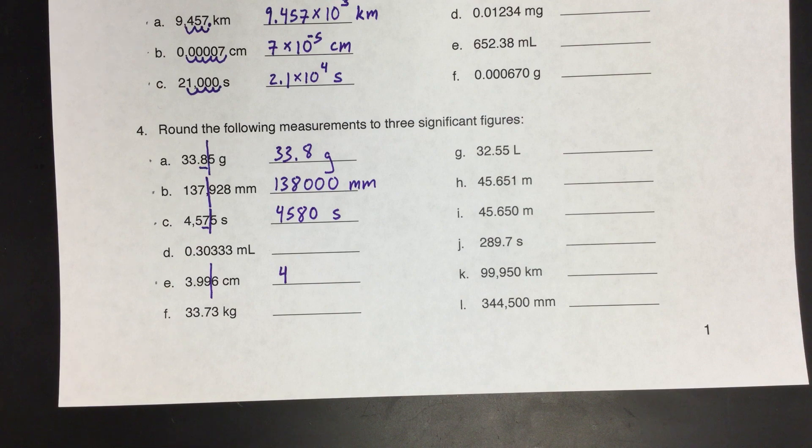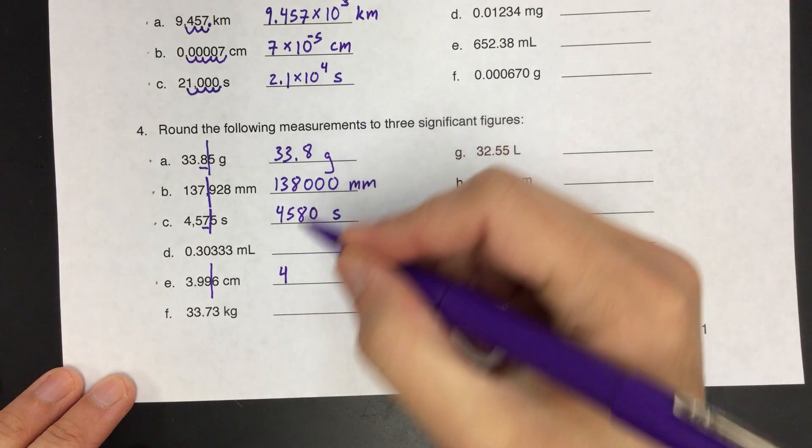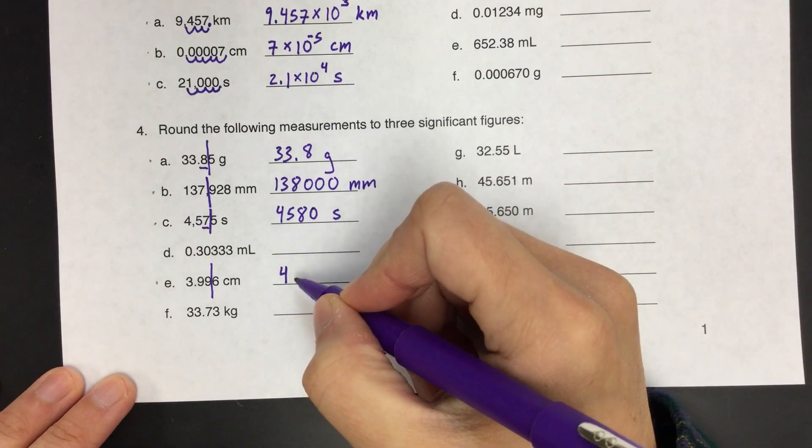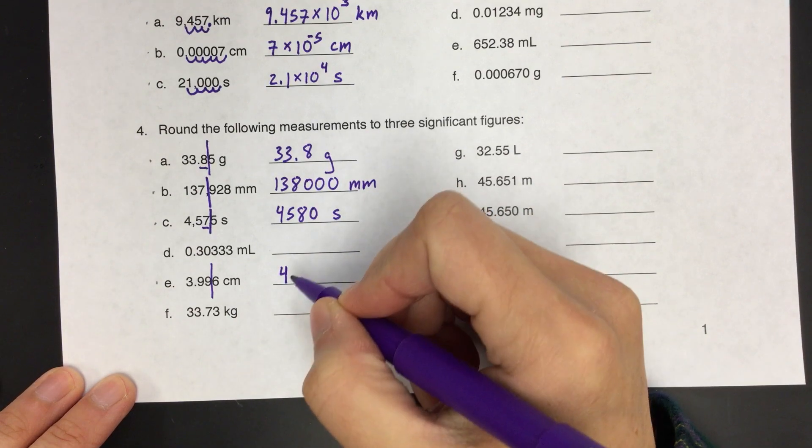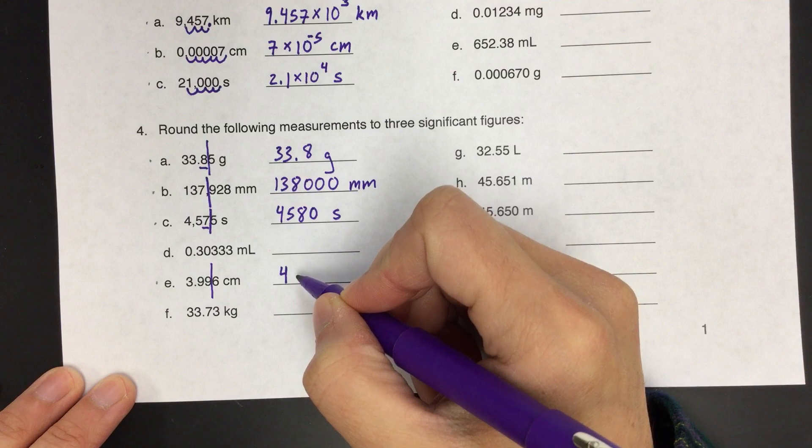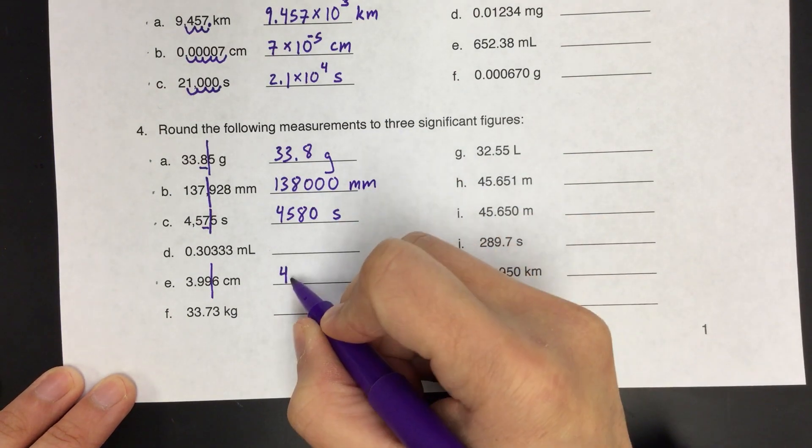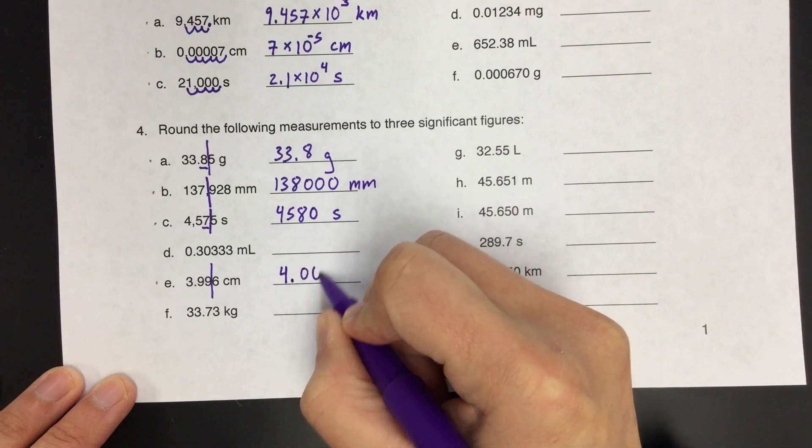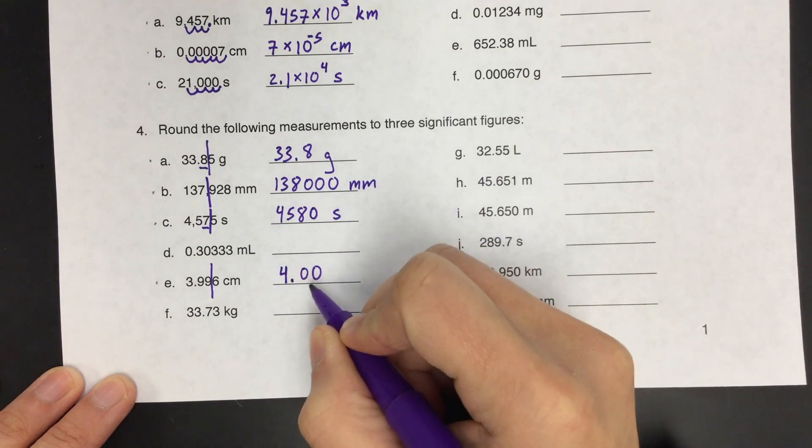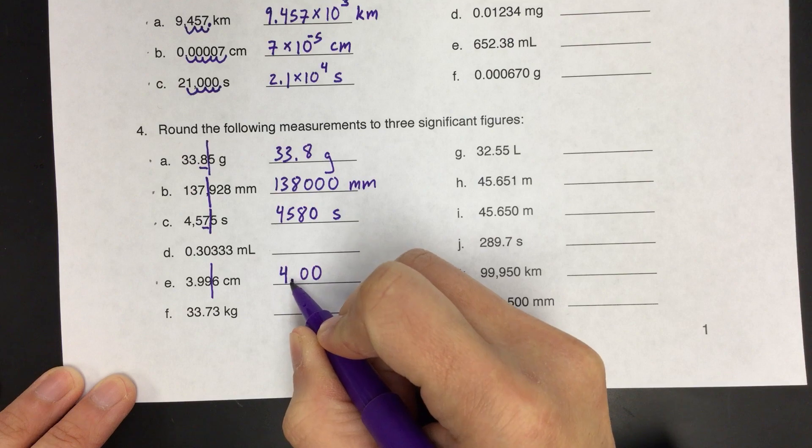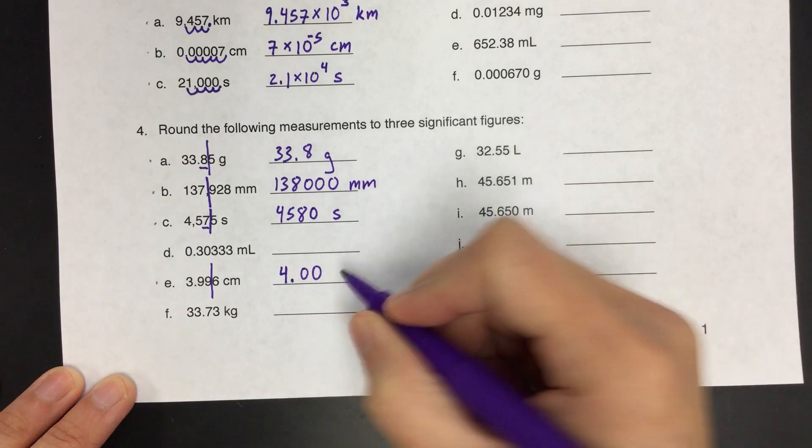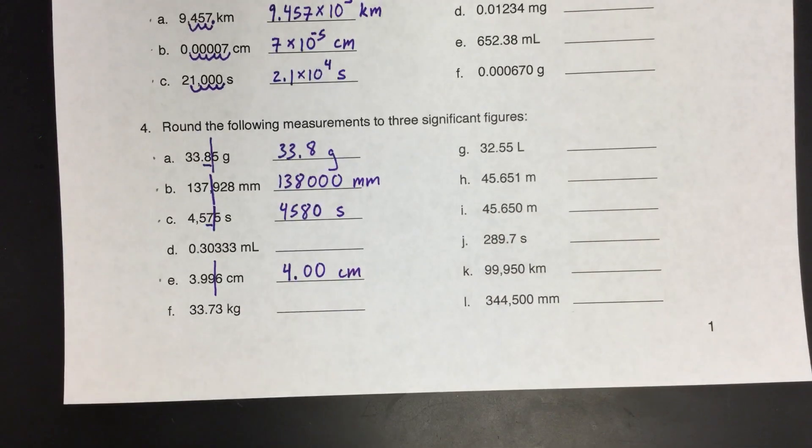However, remember we need 3 significant figures. So kind of similar to what you did up here, you need to, this time, add significant figures to give this number 3 sig figs. Right now it only has 1. So to add the two other significant figures, you'll add 0s. But this time the 0s are significant because there's a decimal point here. So the 0s are showing your accuracy. And then the units are centimeters.